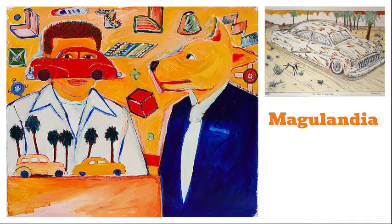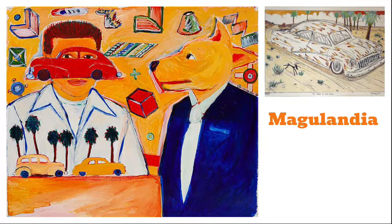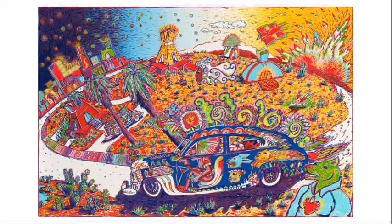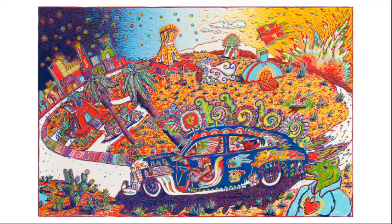We're going to take a look at Gilbert Lujan's world, Mangularia, and we're going to see lots of anthropomorphic animals — kind of like in Disney's Zootopia film. All that means is animals that kind of look like humans or walk like humans. They're really cool, very playful.